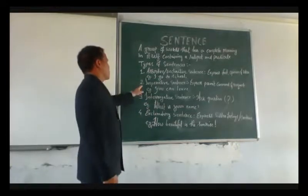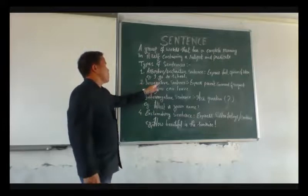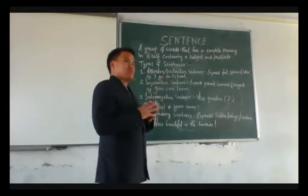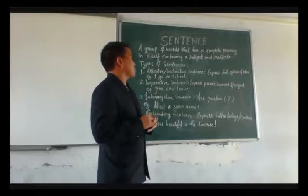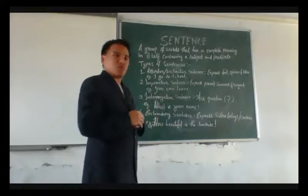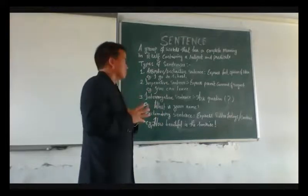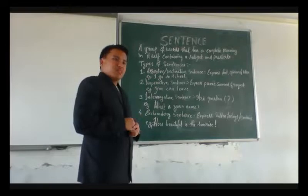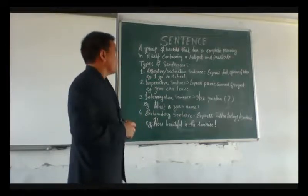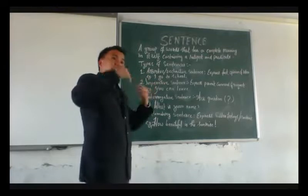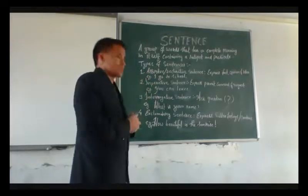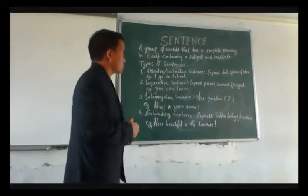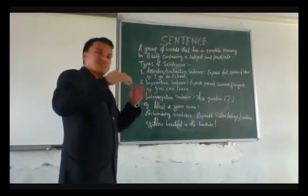The second type of sentence is imperative sentence. Imperative sentence is a kind of sentence where it expresses permission, command, or request. It says that it expresses permission that has been given, or the command that has been given, or a request that has been made.